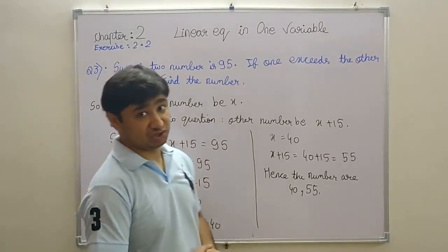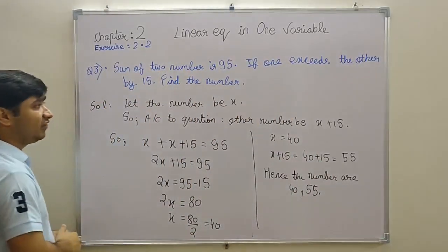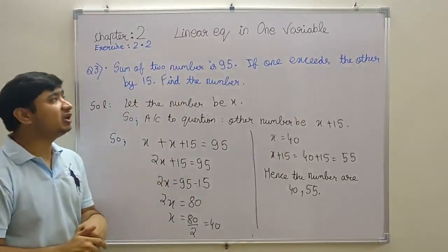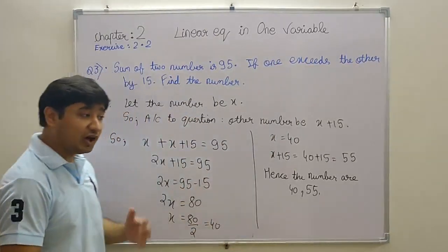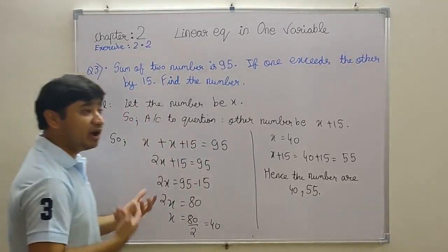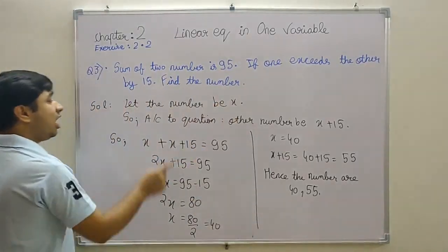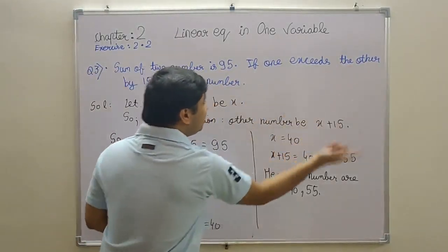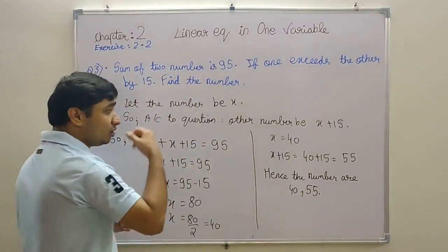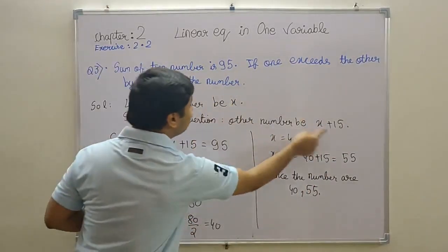Here we come with the third question. We are short on time, so we'll go a bit faster, okay? Question 3: Sum of two numbers is 95. If one exceeds the other by 15, find the numbers. We are doing linear equations in one variable, so we have to work with one variable: x, y, z, etc. But in this chapter which variable is most famous? That is x. So let the number be x. According to the question, if one exceeds the other by 15, it means the second number is 15 more, so x + 15. According to the question, the sum of those two numbers is 95.